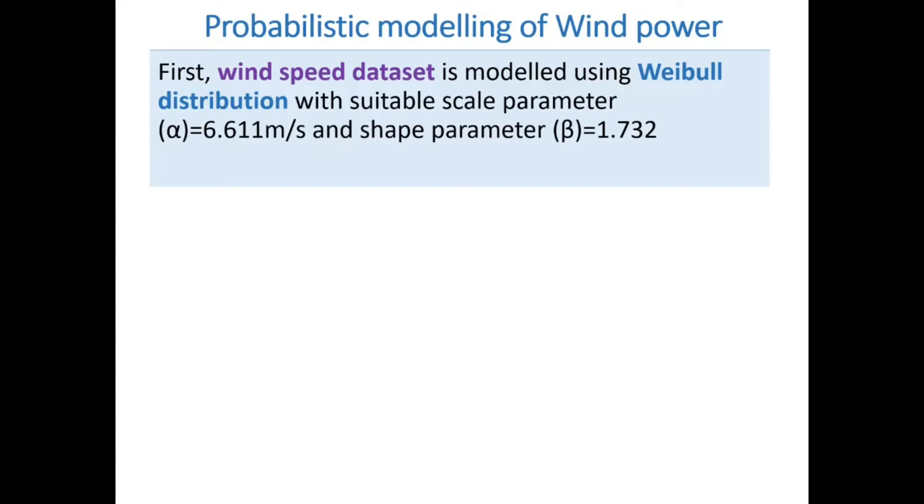The power generated by a wind turbine is primarily dependent on the wind speed. Wind speed can be highly uncertain as it depends on the local weather patterns which cannot be predicted accordingly. For this reason, the power output of a wind turbine is highly uncertain. To model the wind power, the wind speed data set is first modeled using Weibull distribution with suitable scale and shape parameters.